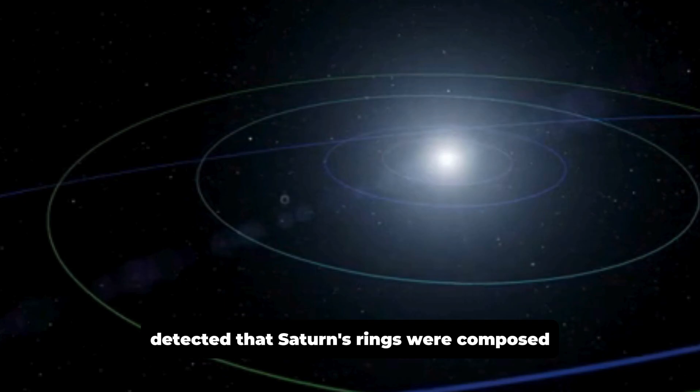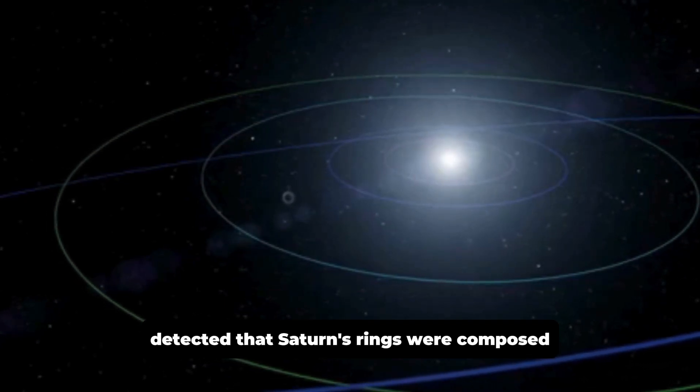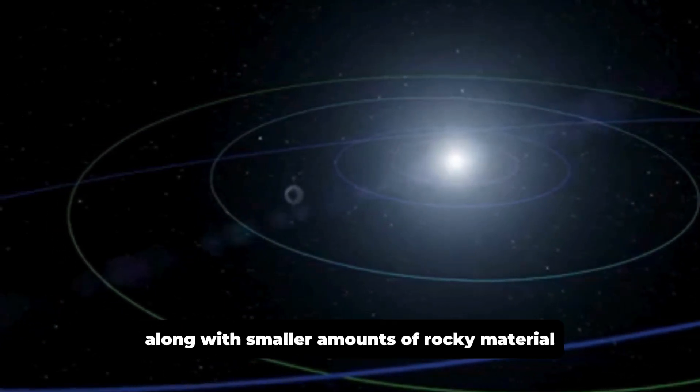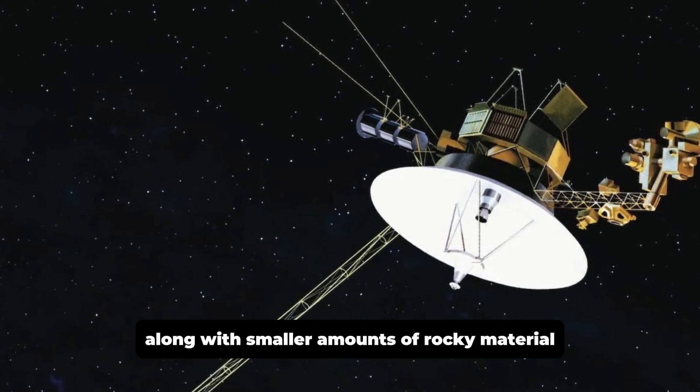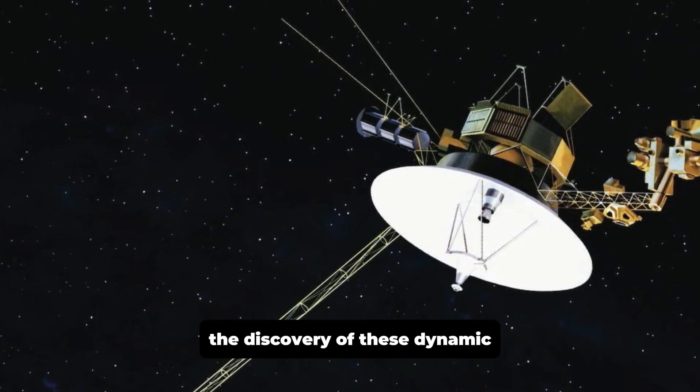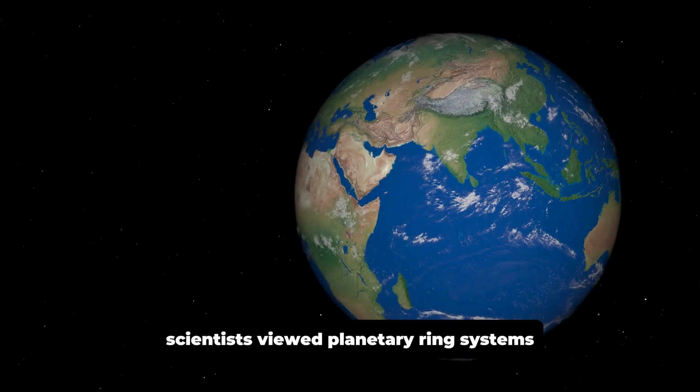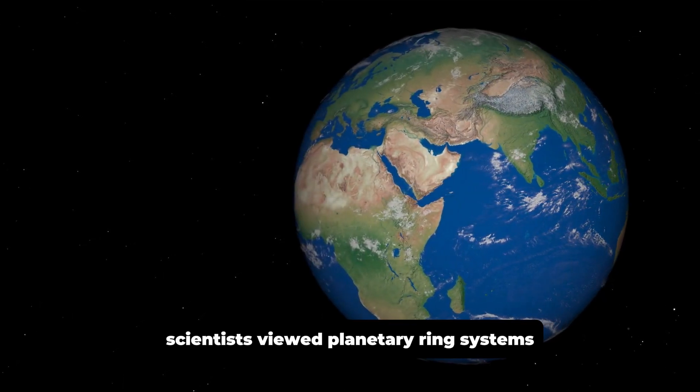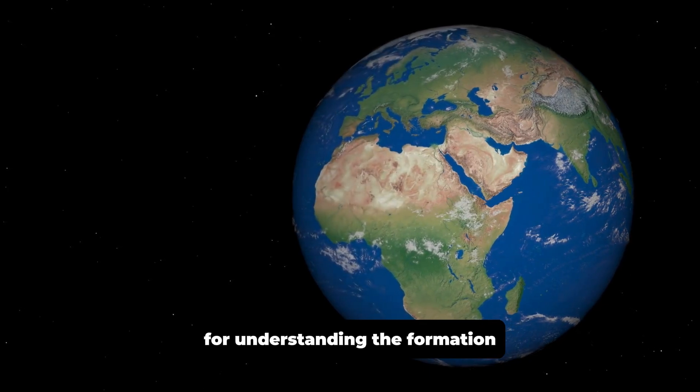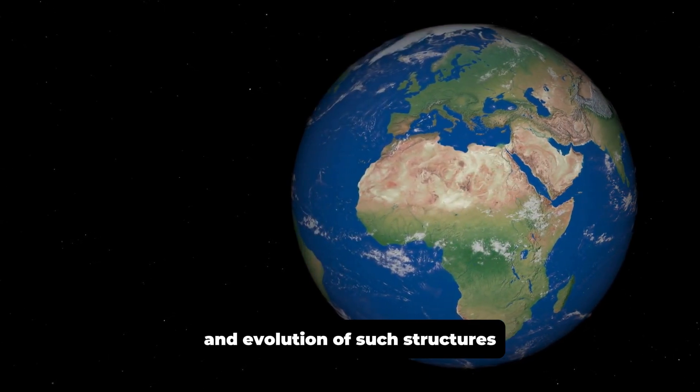The spacecraft's instruments detected that Saturn's rings were composed mostly of water ice, along with smaller amounts of rocky material. The discovery of these dynamic, constantly changing rings forever changed how scientists viewed planetary ring systems and provided a new model for understanding the formation and evolution of such structures.